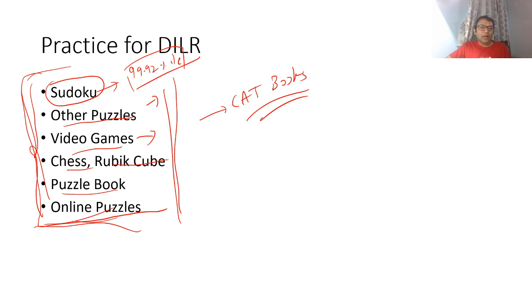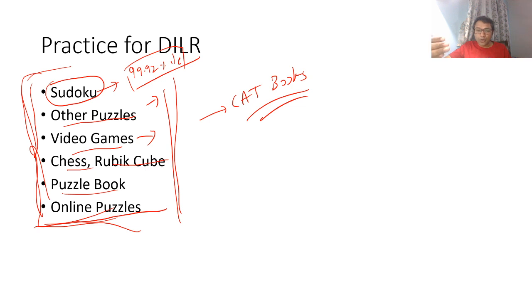If you take time in solving DLR sets, you need to figure out where specifically you're losing time. People normally take time in two or three things. One is reading - sometimes reading takes time, specifically for students from vernacular medium who find reading a bit tough. Normal reading practice will help you comprehend DLR data better. Second could be that you're not able to put the data properly and wasting too much time there. Identify where you're wasting time and try to reduce it.